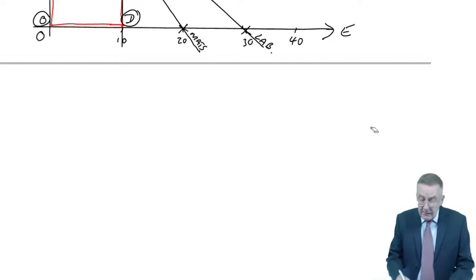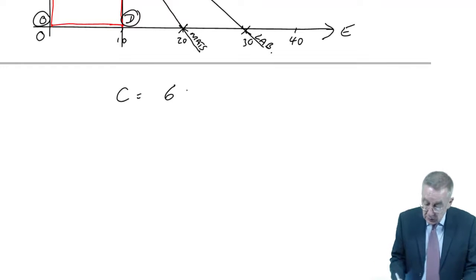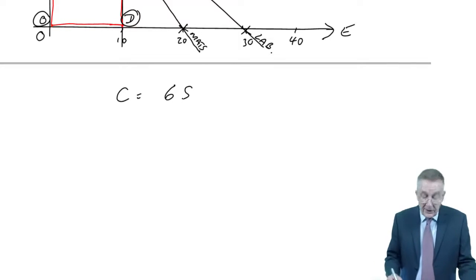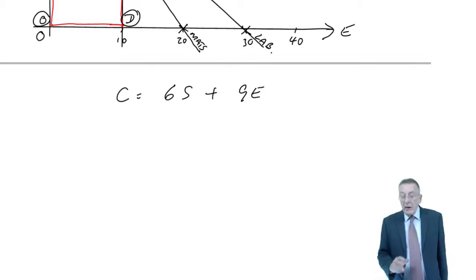And what we do is we write an equation for the objective function. And if you look back, we have that, it was the total contribution, whatever happens is 6S plus 9E.